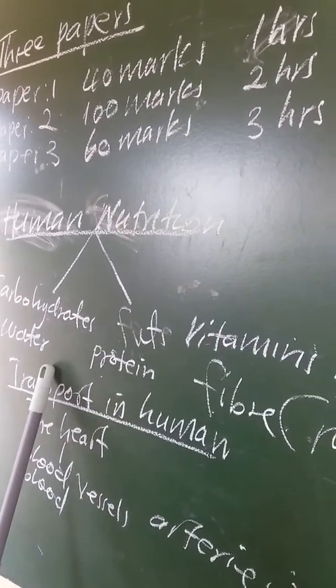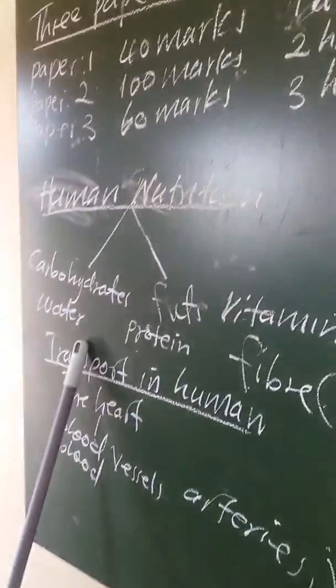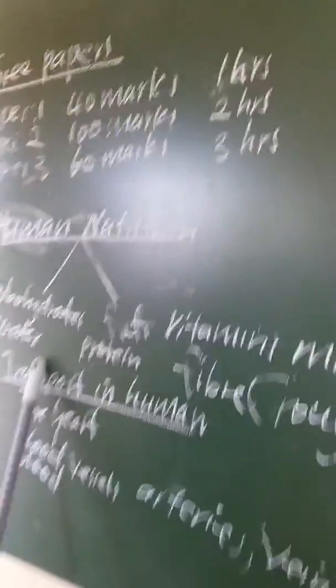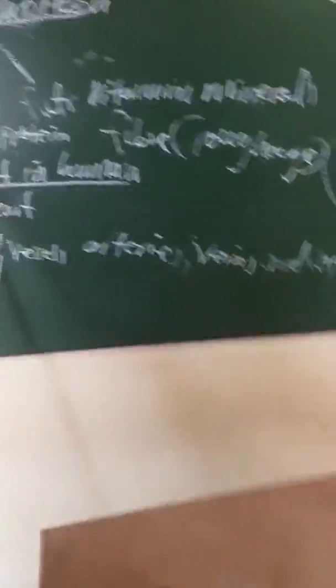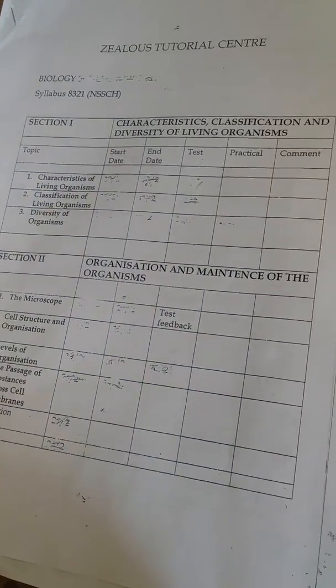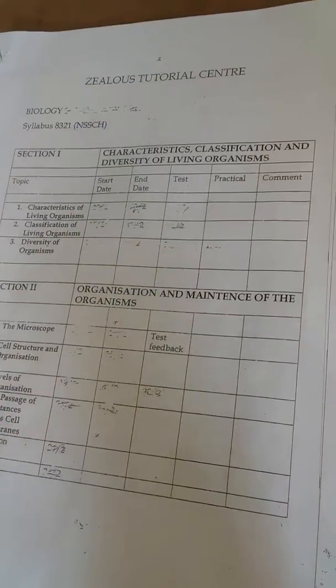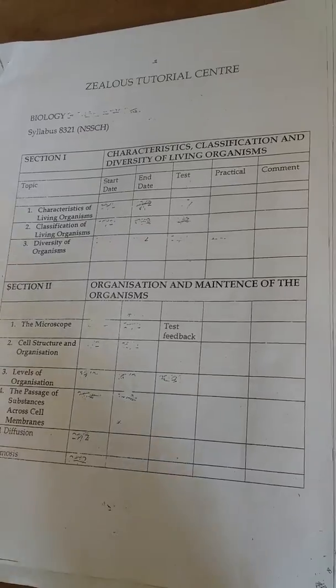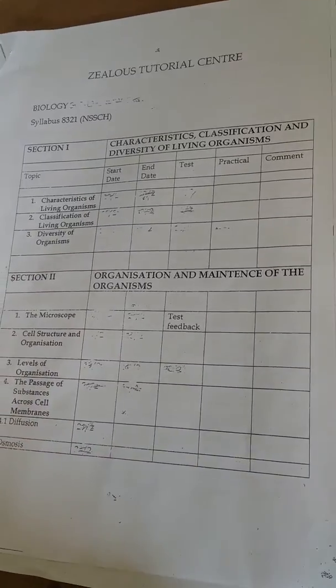From this moment, we are going to focus on the topics which will be covered in the examination. The first topic will be the characteristics of living organisms. As we learned in class, there are seven characteristics of living organisms, and I'll give two examples — movement and excretion.